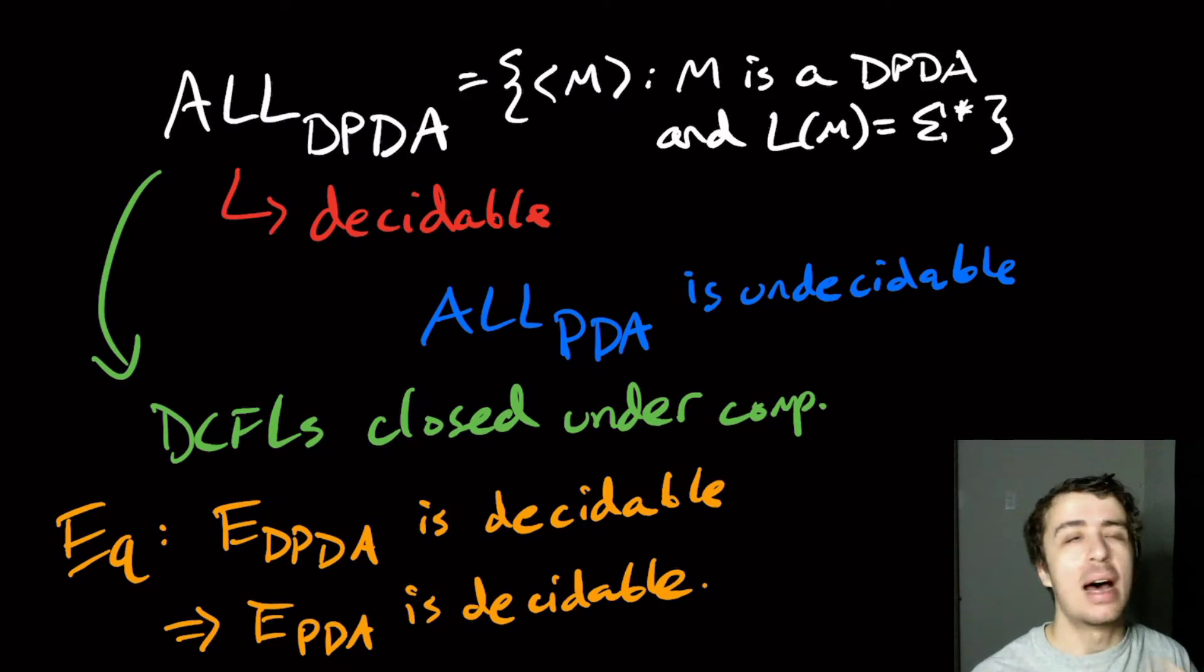Sorry, it is decidable. I may do it on the channel at some point, but it's an extremely long, it would be like dozens of videos in order to cover the entire proof, but it is decidable. I wonder if there are any undecidable problems for DPDAs.